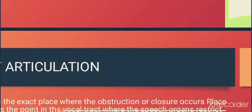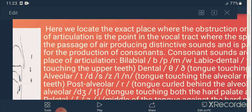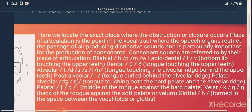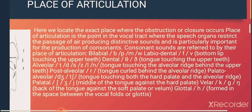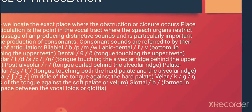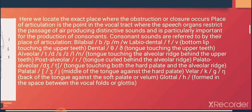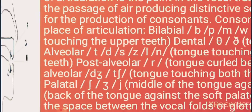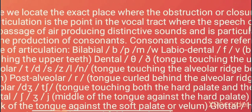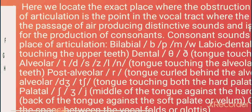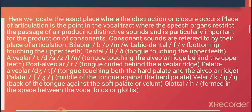The next criterion is place of articulation. With the help of place of articulation, we locate the exact place where the obstruction or closure occurs. Place of articulation is the point in the vocal tract where the speech organs restrict the air passage, producing a distinctive sound.